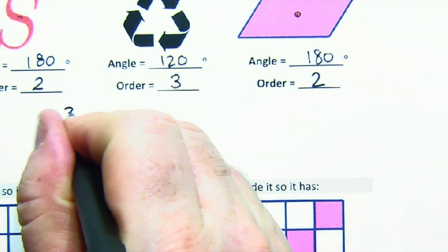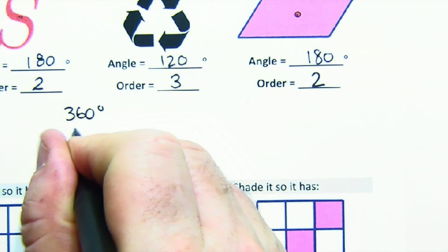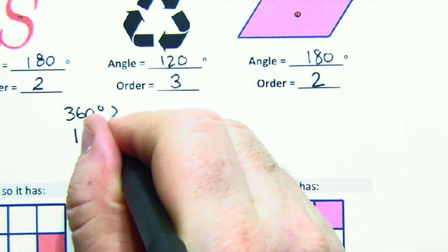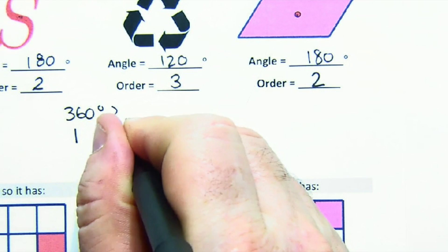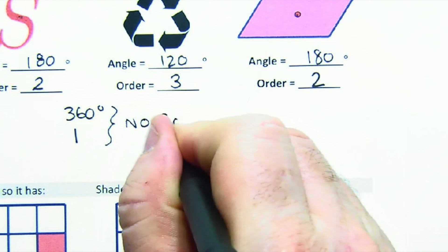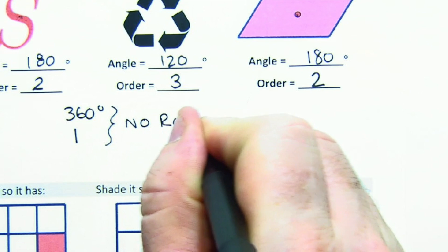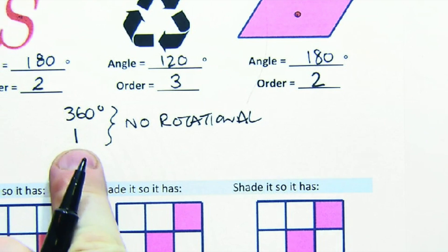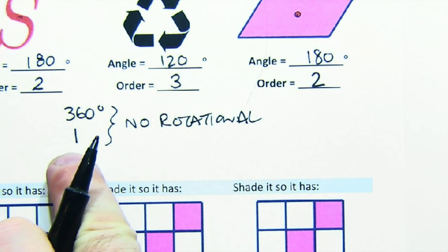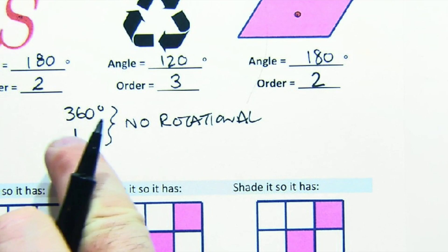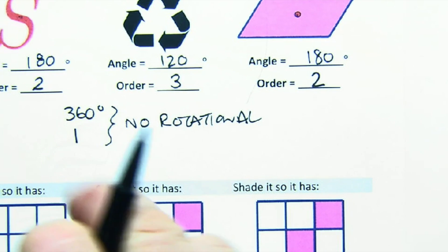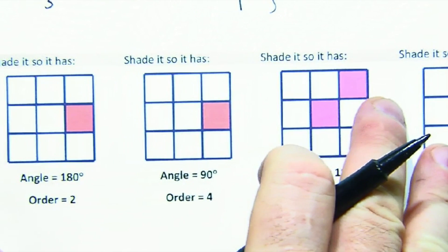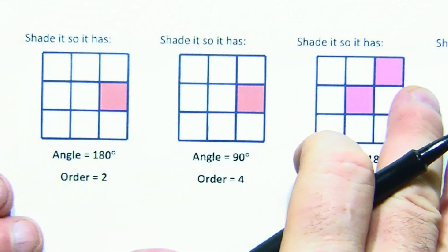One thing to mention: if you go around once, that's an order of one and 360 degrees, but this means you have no rotational symmetry — you went all the way around. This is confusing to students because we want to put zero there, but an order of one means no rotational symmetry.